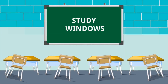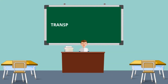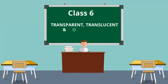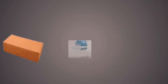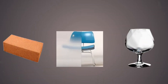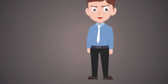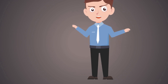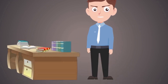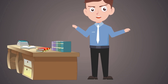Hi everyone, this is Srinan and welcome to Study Windows. Today we are going to learn about transparent, translucent, and opaque objects. Let us consider some different objects. To understand the differences between all these three, we have to know first how light travels and how light interacts with objects.